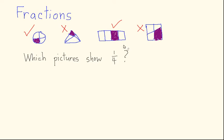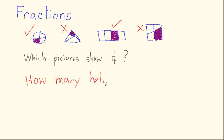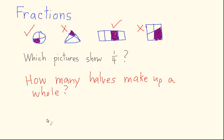Let me ask you now a more basic question. Suppose I gave you a pizza pie and I broke it up into two halves. How many halves make a whole? If I started off with the whole pizza pie and divided it into two halves, how many halves do you need to get a whole? The answer to that is actually two.